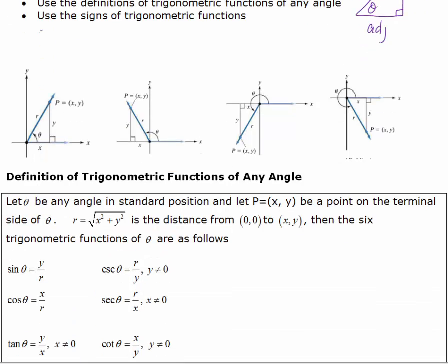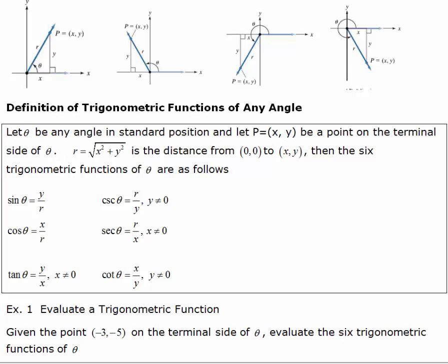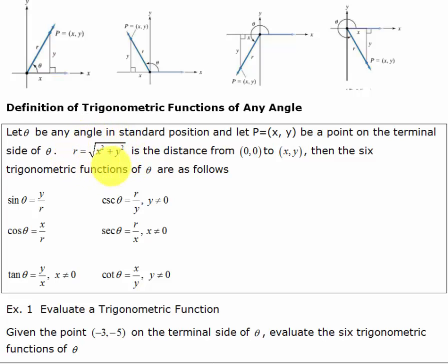Let's look at the official definition. Let theta be any angle in standard position, and let P equal (x, y) be a point on the terminal side of theta. R is equal to the square root of x squared plus y squared. That comes from the idea of the Pythagorean theorem, and is also derived from using the distance formula from the origin to the point on that terminal side.